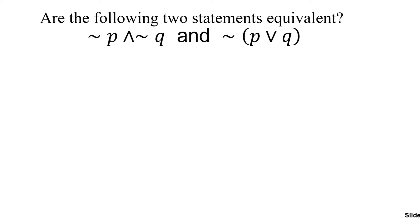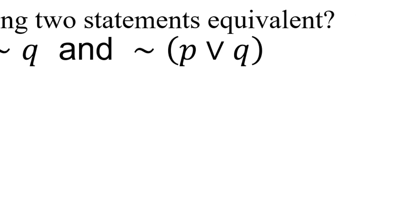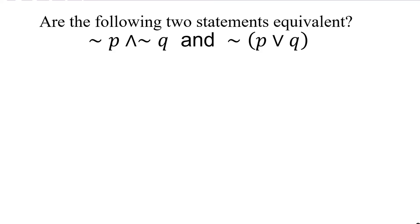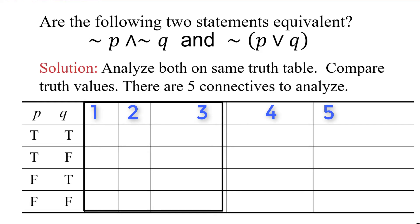Now we're going to look at two very similar statements to the ones we just looked at. The statement on the left, negation P and negation Q, is similar to negation P or negation Q that we did in the previous slide, but we have an and instead of an or. And in the statement on the right, negation of parentheses P or Q, we have an or statement instead of the and statement we had on the previous slide.